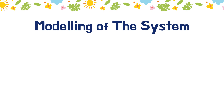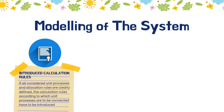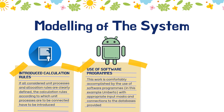Moving on to the modeling of the system. There are some aspects we must address. First, we should introduce the calculation rules — if all considered unit processes and allocation rules are clearly defined, the calculation rules according to which unit processes are to be connected have to be introduced. Next, we should consider the use of software programs; this work is comfortably accomplished using software programs like SimaPro or GaBi with appropriate input masks and connections to databases provided.